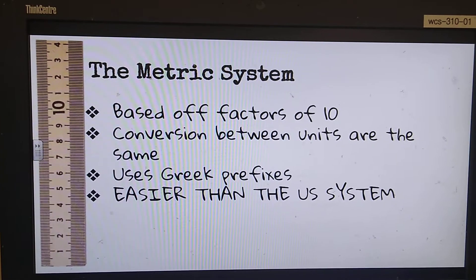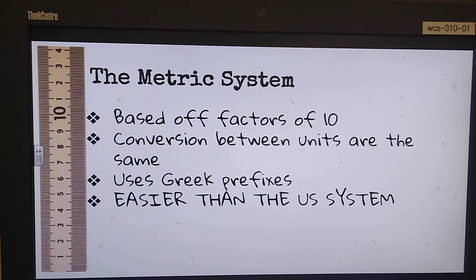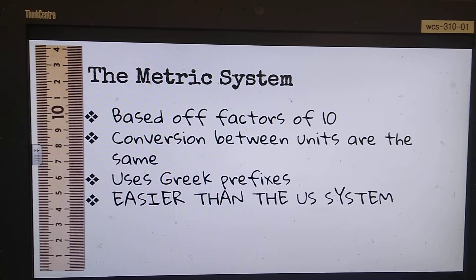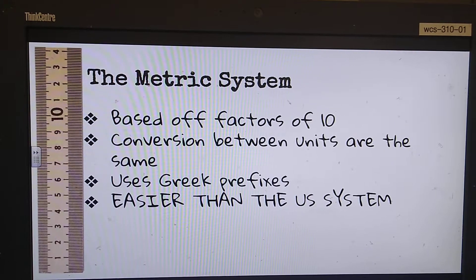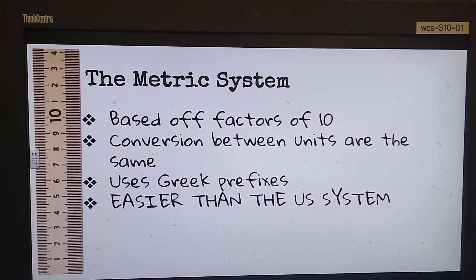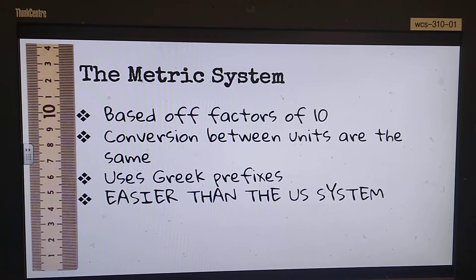But if I asked you how many inches are in a foot, you would go, 'Oh well, 12 equals one.' So we're no longer on the same system of factors of 10. 12 equals one, then 36 equals one, and then how many feet are in a mile? 5,280 is nowhere close to being a common sense number.